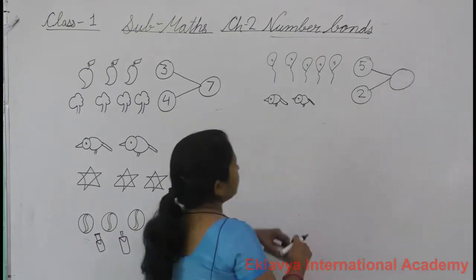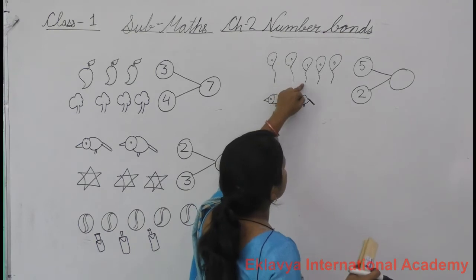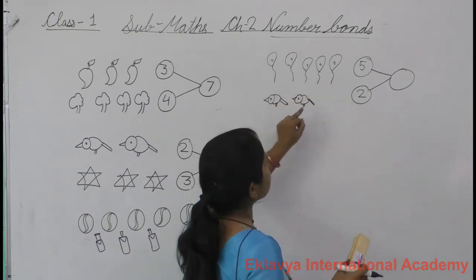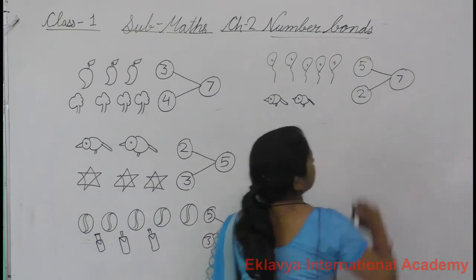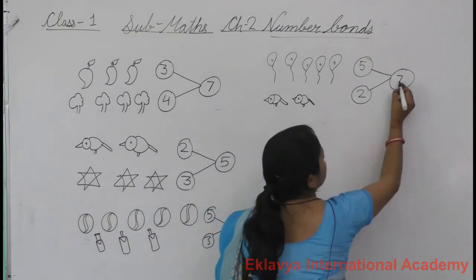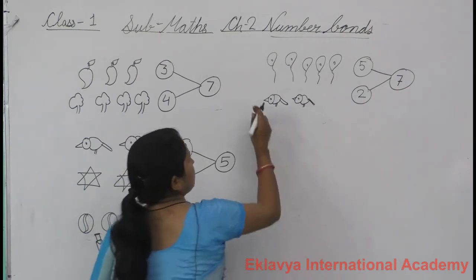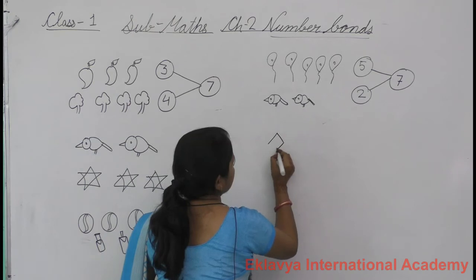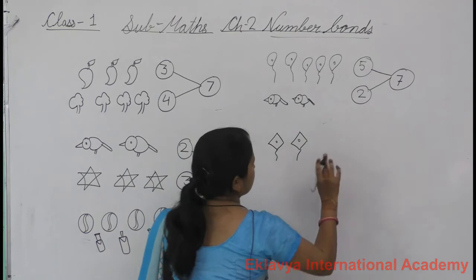Count with me. One, two, three, four, five, six, seven. Put the number seven there. Seven. Next.